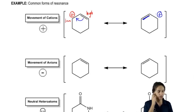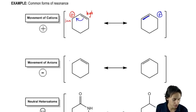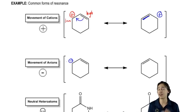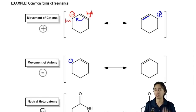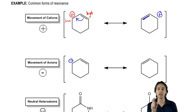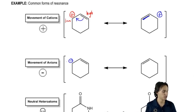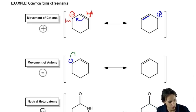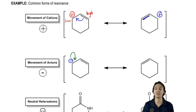Now let's look at anions. What if I had a negative charge next to that double bond? What do you think is going to be the region of highest electron density? It turns out the double bond has a lot, but a full negative charge is going to have even more electron density because a full negative charge means there's a lone pair just hanging out. So with a full negative charge, we're actually going to use two arrows. I'm going to take these electrons and push them into this bond, making a double bond.